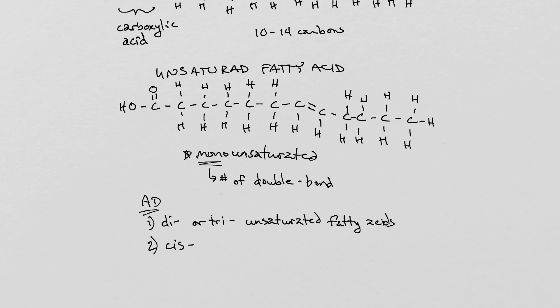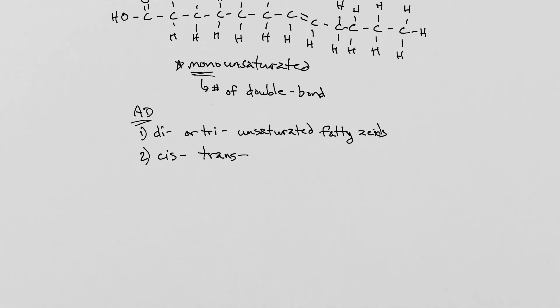The second thing is there are two kinds of unsaturated fatty acids, and those are cis and trans fatty acids. The cis and trans has to deal with where the hydrogens are around that double bond.